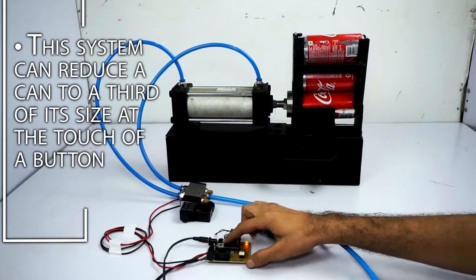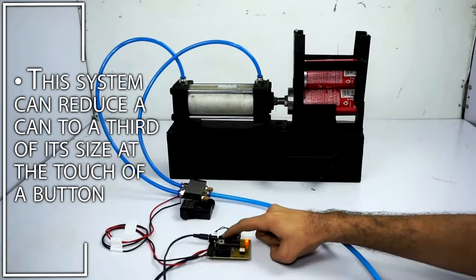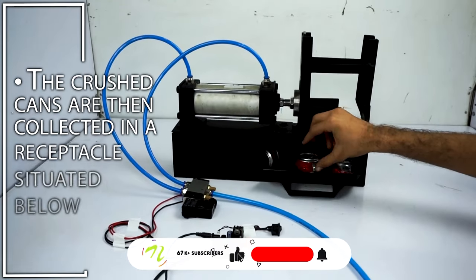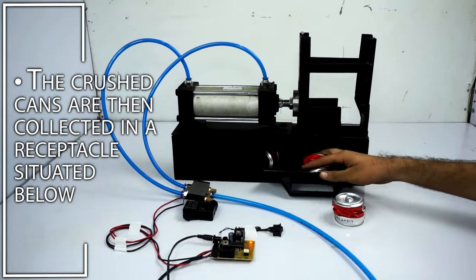This system can reduce a can to one third of its size at the touch of a button. The crushed cans are then collected in a receptacle situated below.